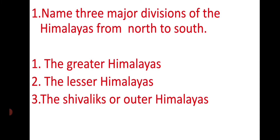First question is: name three major divisions of the Himalayas from north to south. The Himalayas are divided into three ranges. They are Greater Himalayas, Lesser Himalayas, and Siwaliks. The Siwaliks have another name: Outer Himalayas.